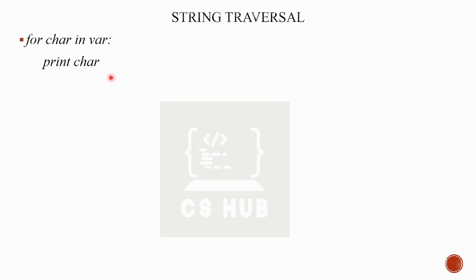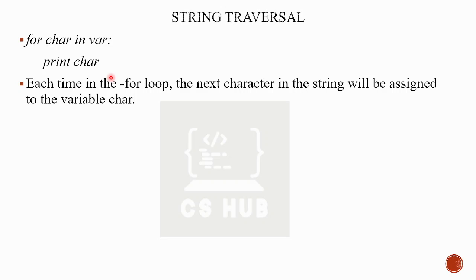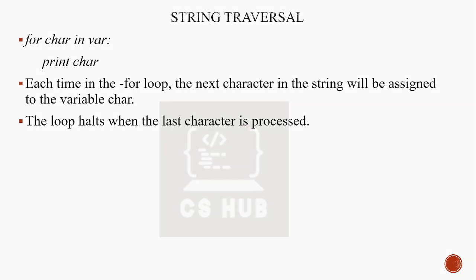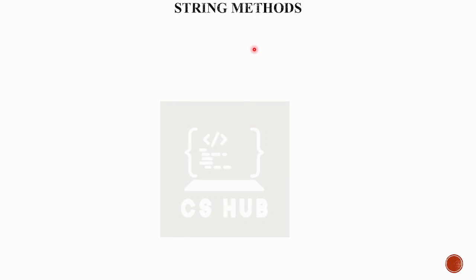For the for loop, each time through the loop, the next character in the string will be assigned to the variable. Once we reach the end of the string — the length of var — the loop will automatically stop after the last character is processed.